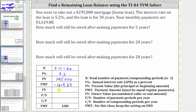We are solving for the future value after five years. The number of payments per year and the number of compounds per year are both 12. Even though we're not told the interest is compounded monthly, if we make monthly payments and it's not given, we also assume the number of compounds per year is 12. We always leave the PMT option at the bottom set on end, not begin.